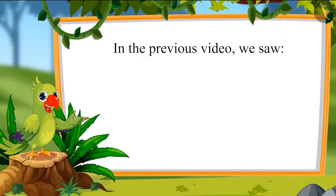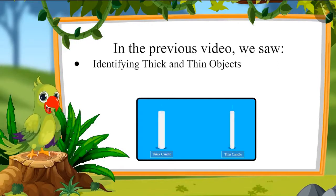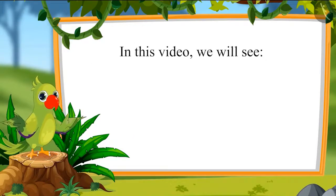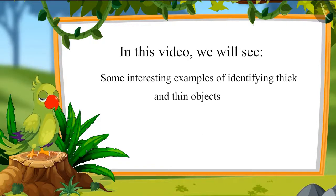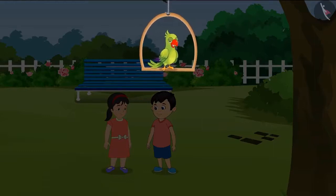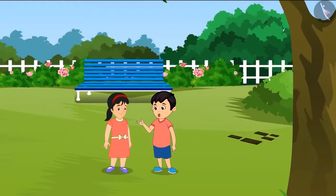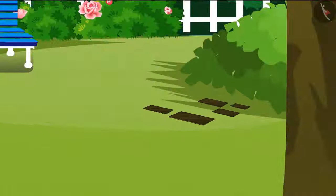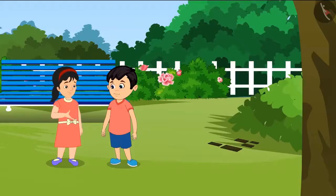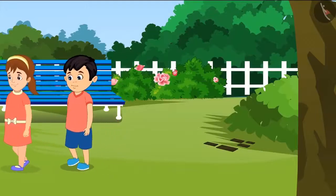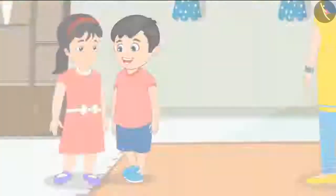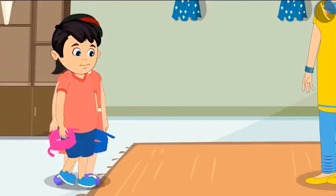Hello children. In the previous video, we saw identifying thick and thin objects and the thickest and thinnest objects. Chotu and Pinky want to have a swing on the tree behind their house. They need a piece of wood and a rope. A piece of wood is right there. They go to get a rope from mummy. Mummy tells them there are two ropes inside. Chotu brings both the ropes.